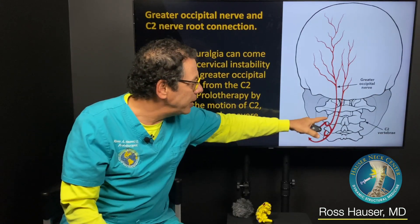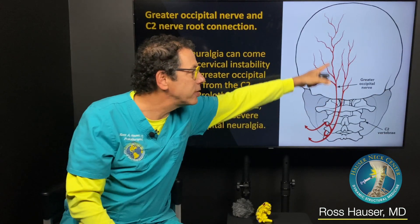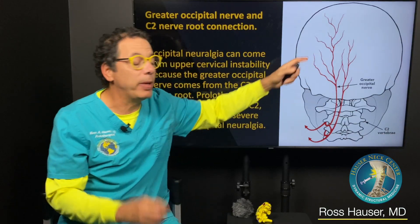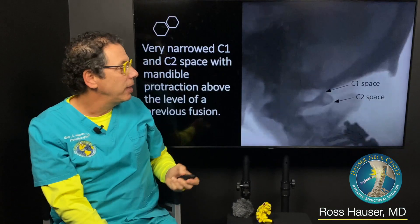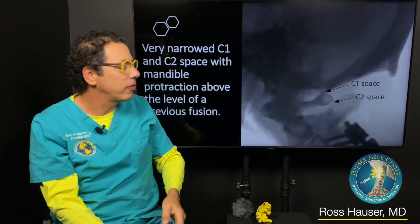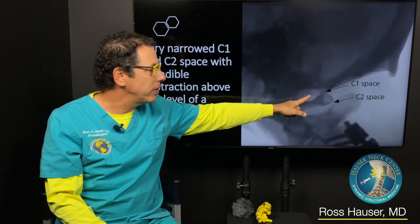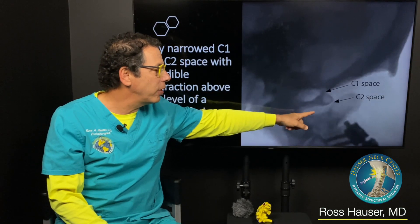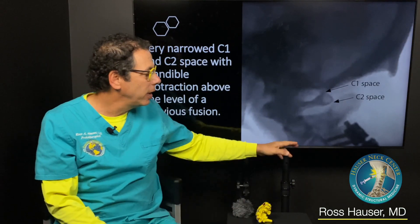The C2 nerve forms the greater occipital nerve. And when that gets stretched and compressed, that can give you occipital neuralgia. The C1 nerve goes here, the C2 nerve goes there.